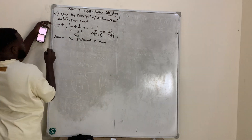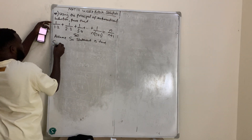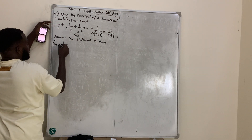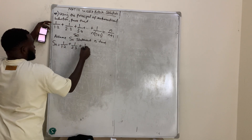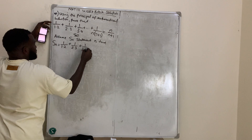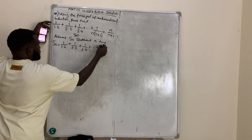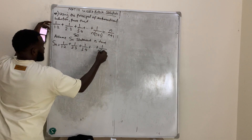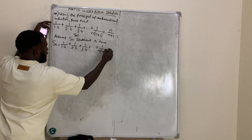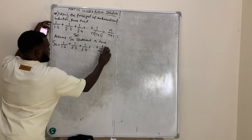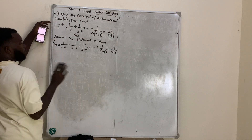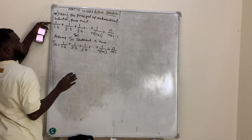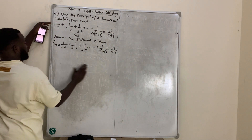To write that assumption, state that Sn: 1/(1·2) + 1/(2·3) + 1/(3·4) + ... + 1/(n(n+1)) = n/(n+1). Once you have written that, move to the next step.